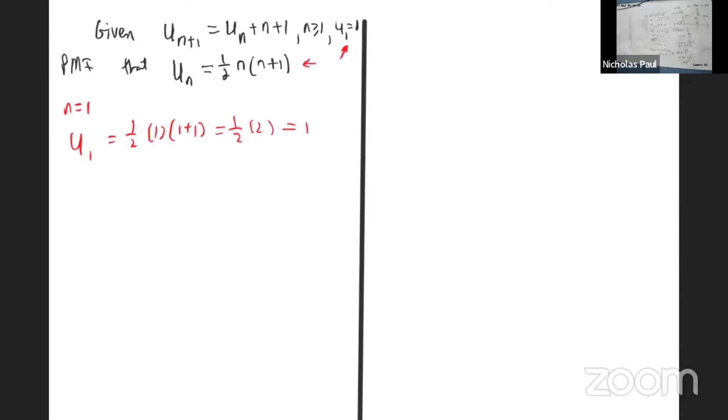All right, then we want to assume it's true for n equals k. So now that means we're taking n and putting in k, so it means that Uₖ is equal to half k by k plus one.